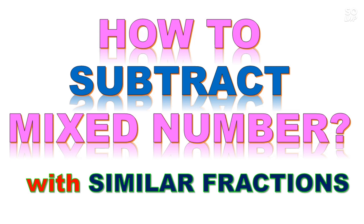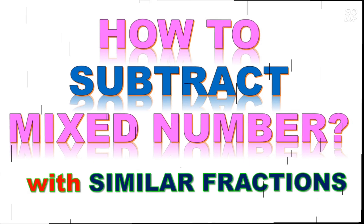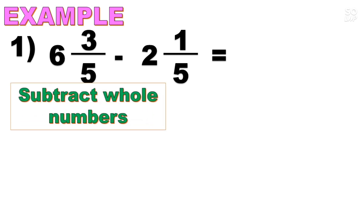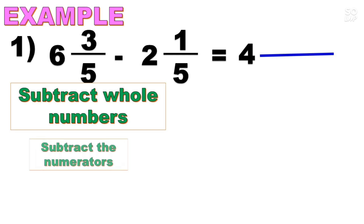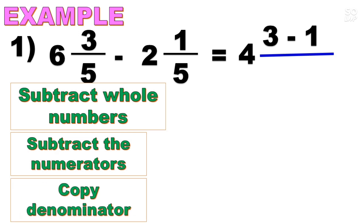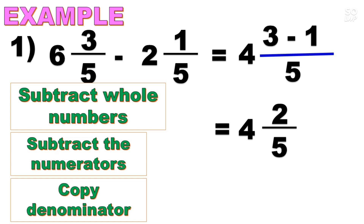Now, how to subtract mixed numbers with similar fractions. Example number 1: 6 and 3/5 minus 2 and 1/5. The two proper fractions 3/5 and 1/5 have the same denominator. When the denominators are the same, we subtract the whole numbers: 6 minus 2 is 4. Then subtract the numerators: 3 minus 1. Then copy the common denominator, which is 5. Simplify: we now have 4 and 3−1 over 5, which is 4 and 2/5. The final answer is 4 and 2/5.